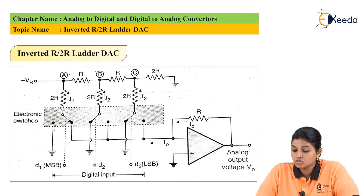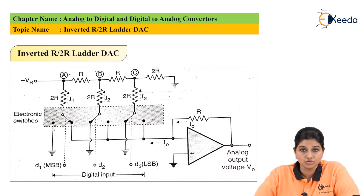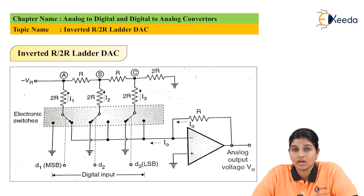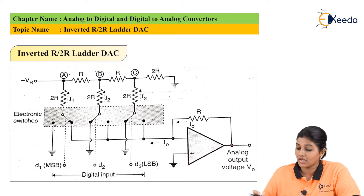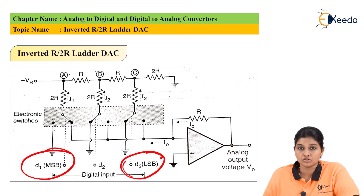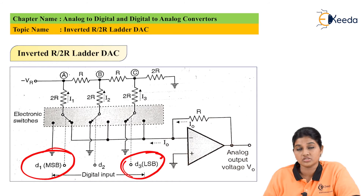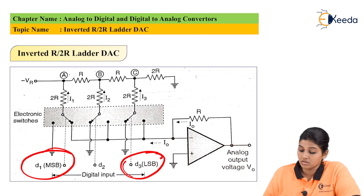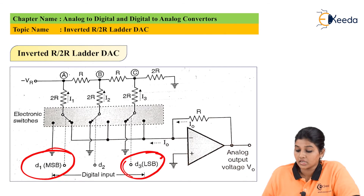Here, two resistor values — 2R and R — are used. The circuit is called inverted R2R ladder because the position of LSB and MSB is interchanged. In the original circuit, LSB is present at one end, but in the inverted ladder circuit, this position is interchanged. The circuit consists of an op-amp which is considered as an ideal op-amp. In this circuit, we are using a 3-bit digital input. The digital inputs are connected to switches, and each switch is connected either to the inverting terminal of the op-amp or to the ground.